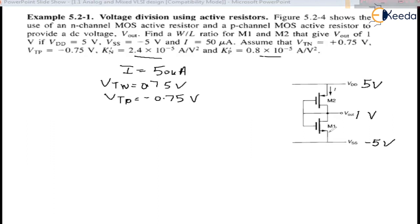For M1 transistor, for this NMOS transistor, this terminal is at minus 5 and this terminal is 1 volt. So this terminal at lower potential, this is the source. Okay.